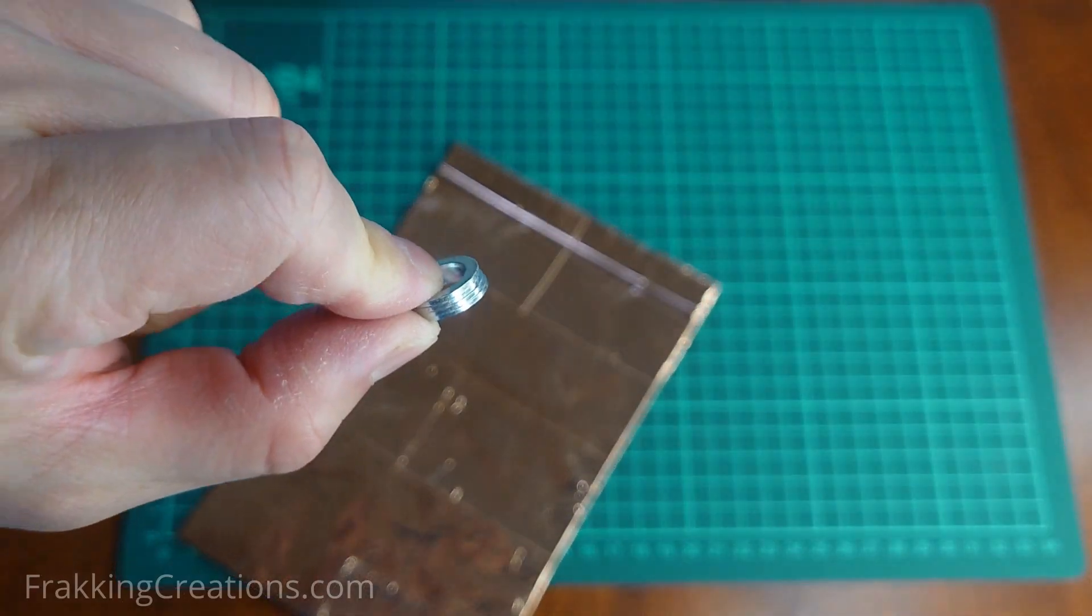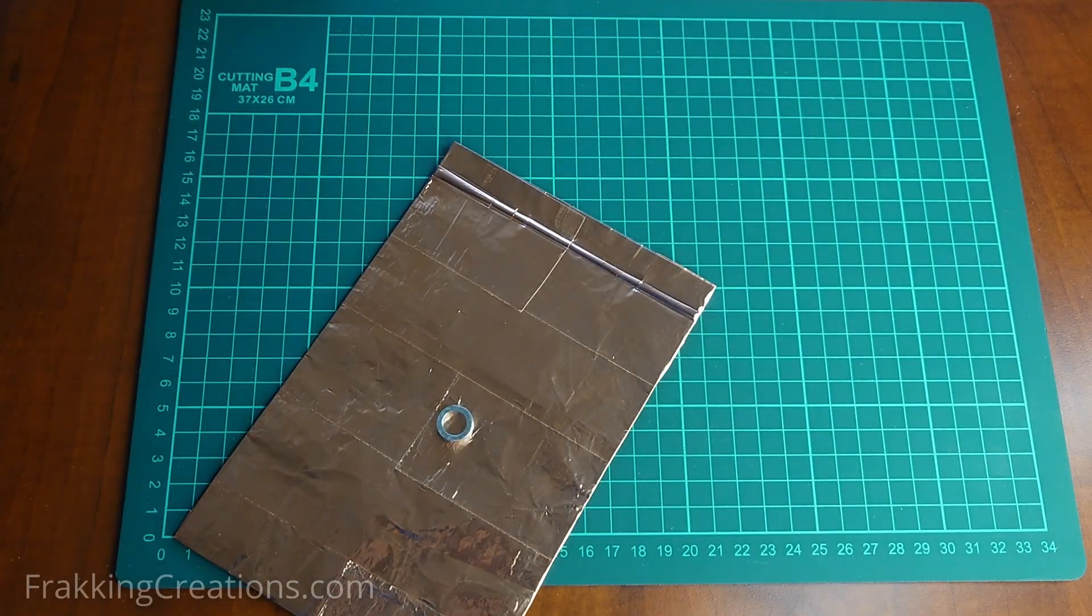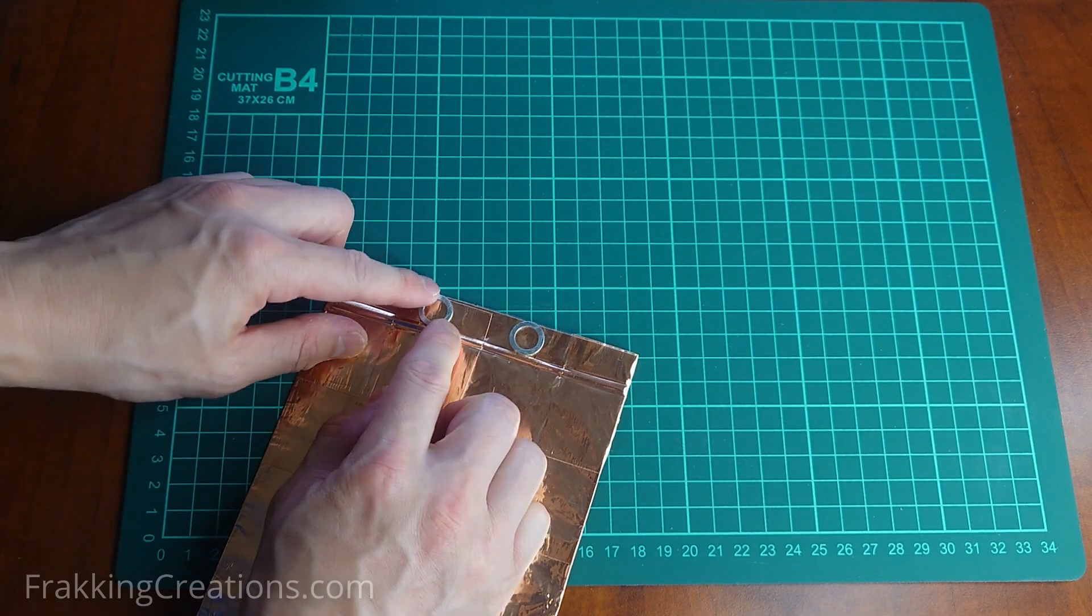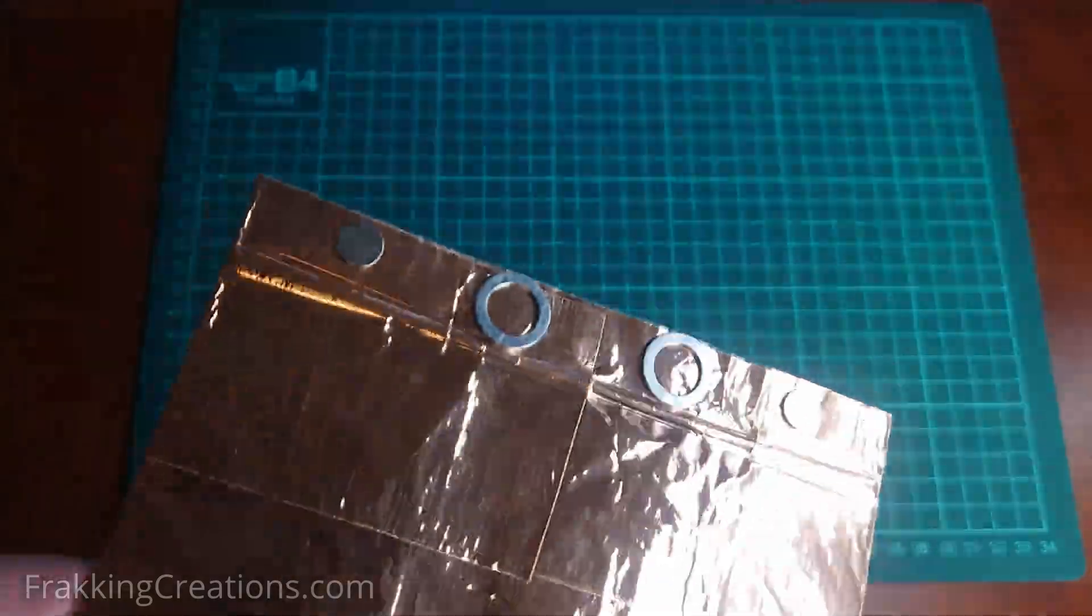We are going to use thin rare earth magnets for this. The magnets are added before taping and are placed a few centimeters apart. Use the magnets to hold each other in place to make it easier to tape them in place.